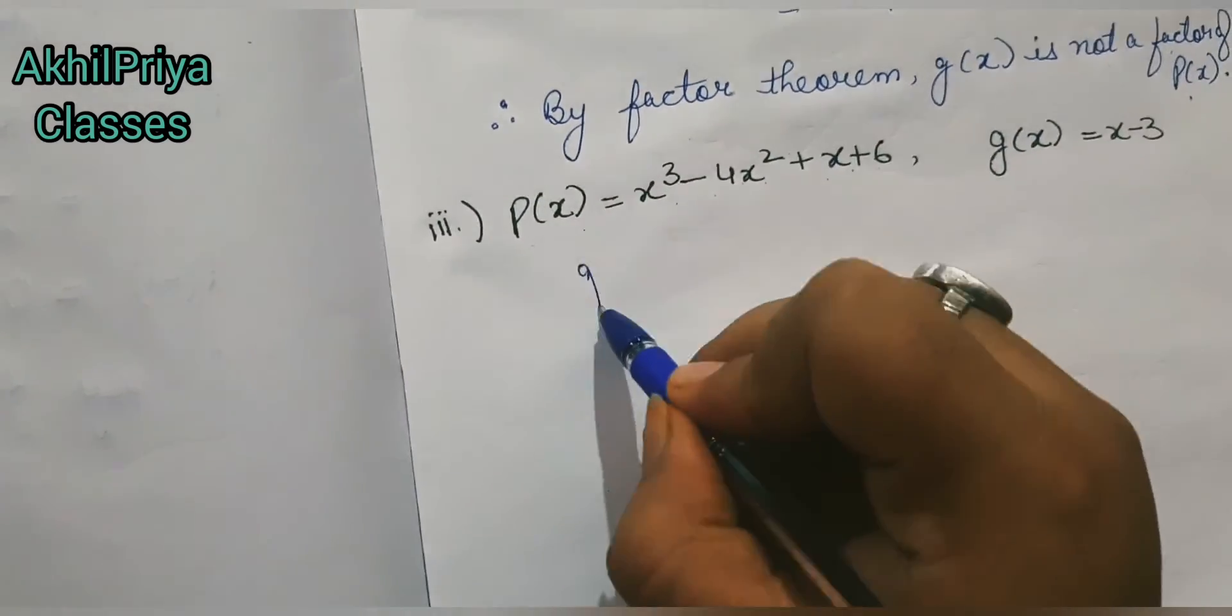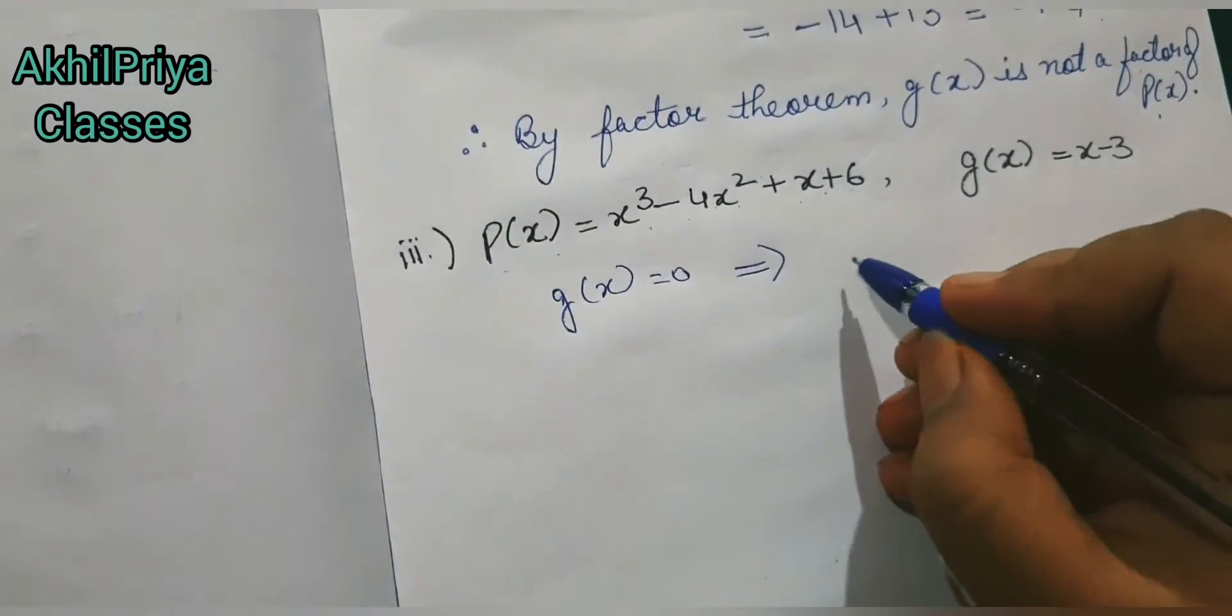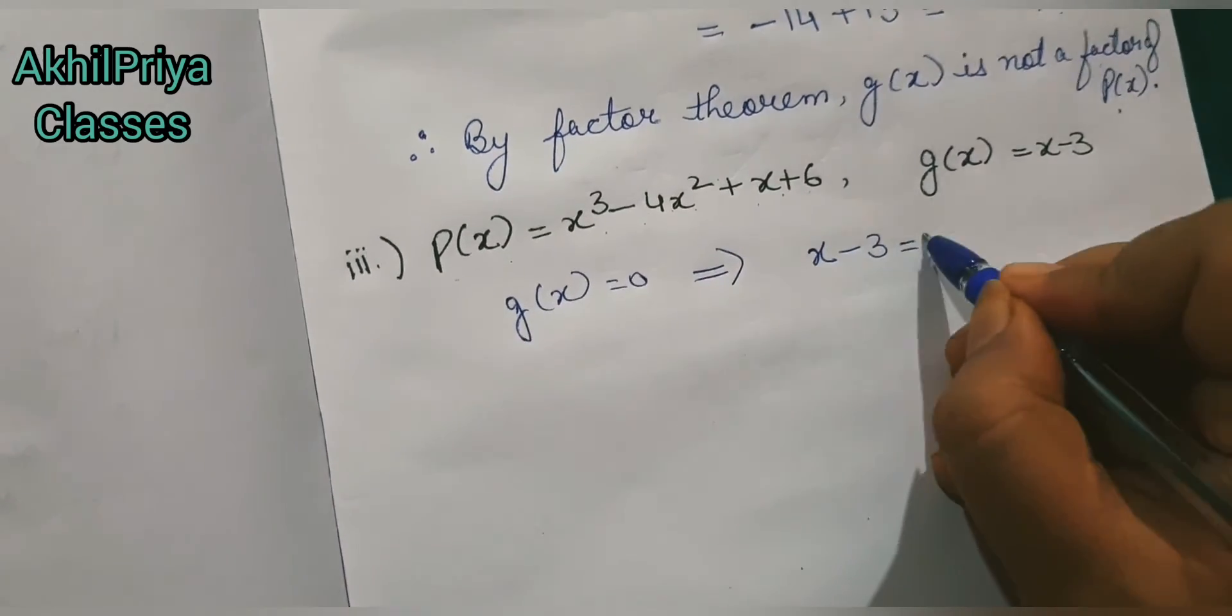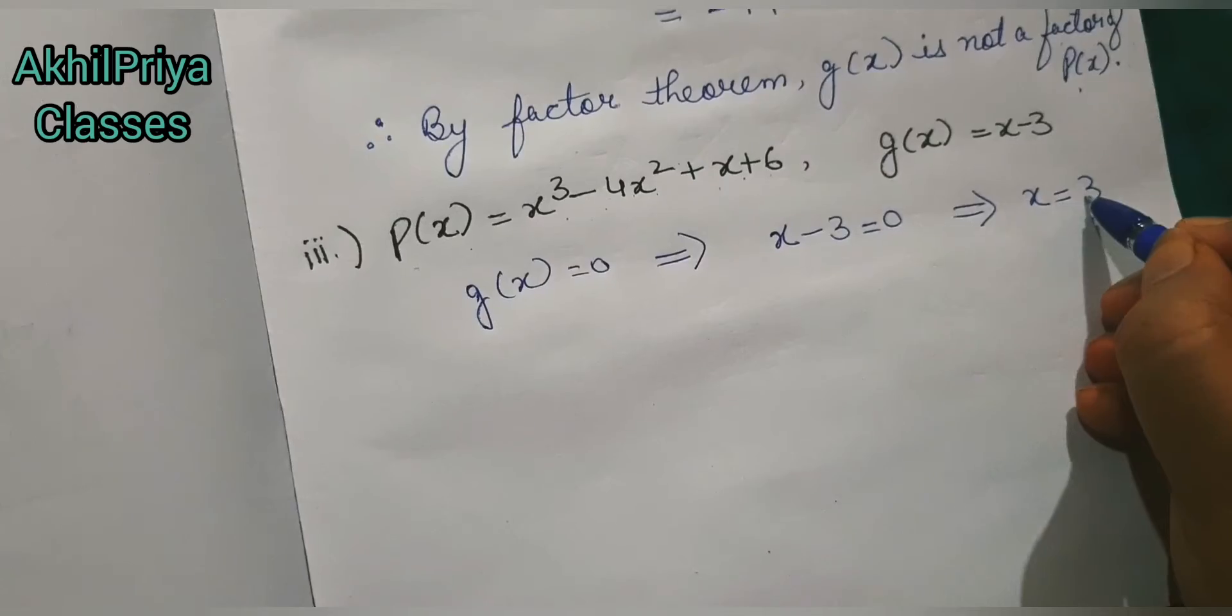First, as we have been doing, we will put g(x) = 0. When we put g(x) = 0, we get x - 3 = 0, so x = 3. Now we will put this 3 in our p(x).